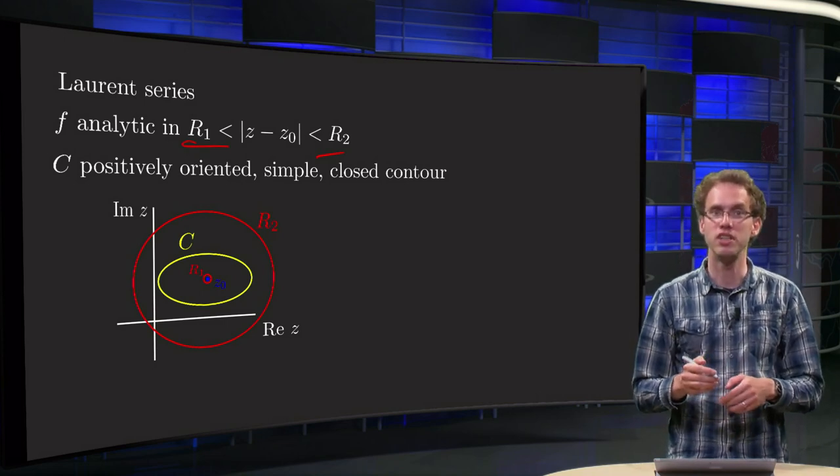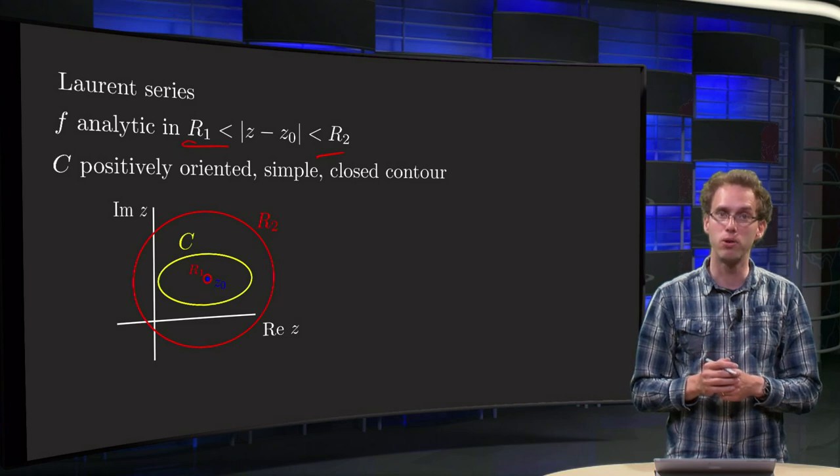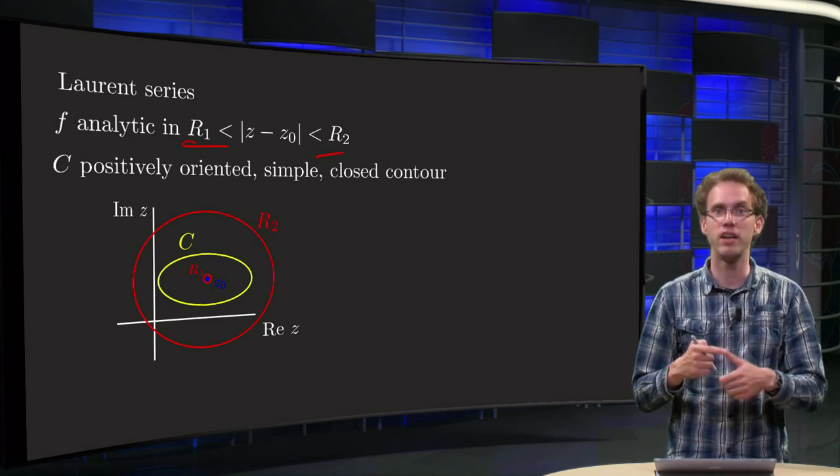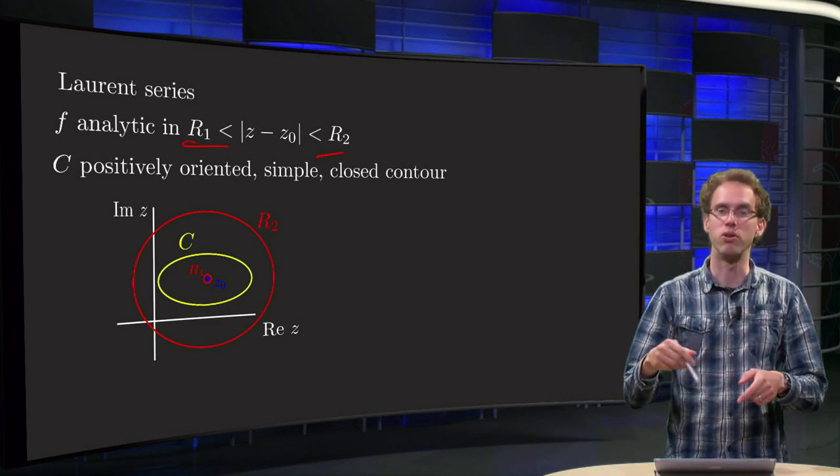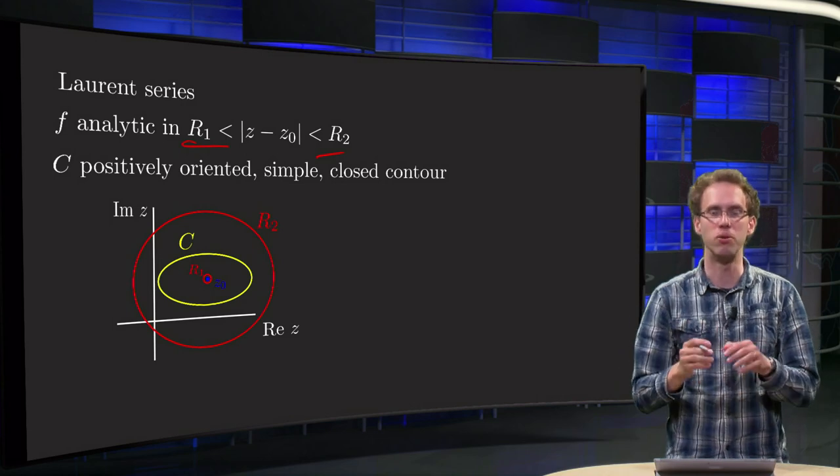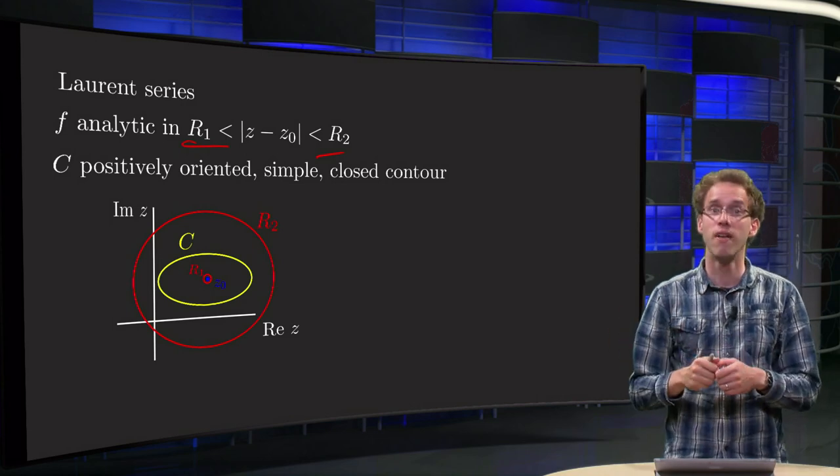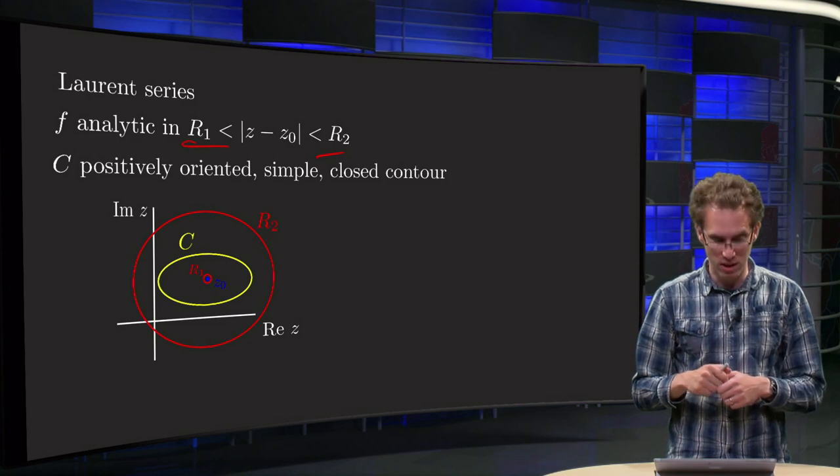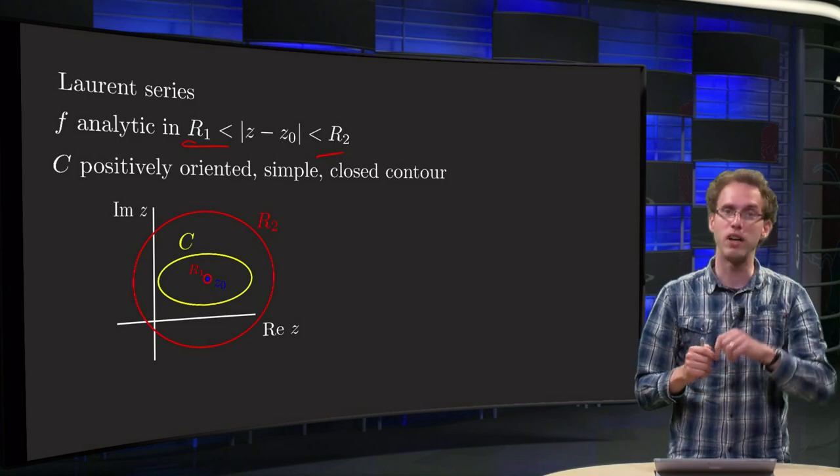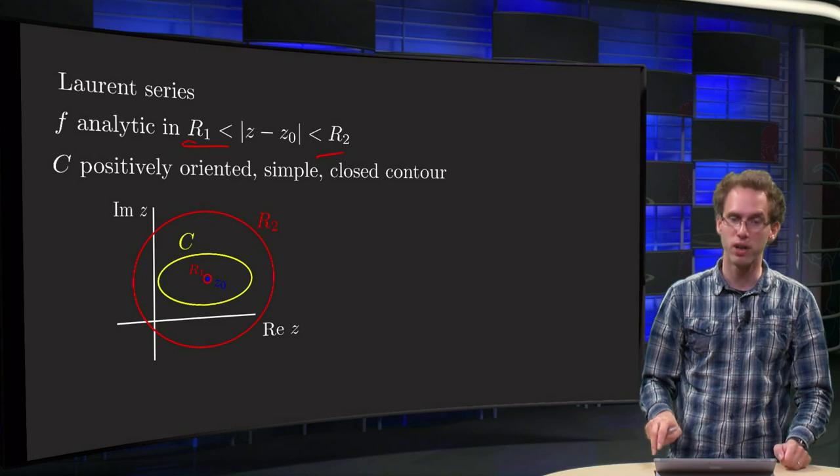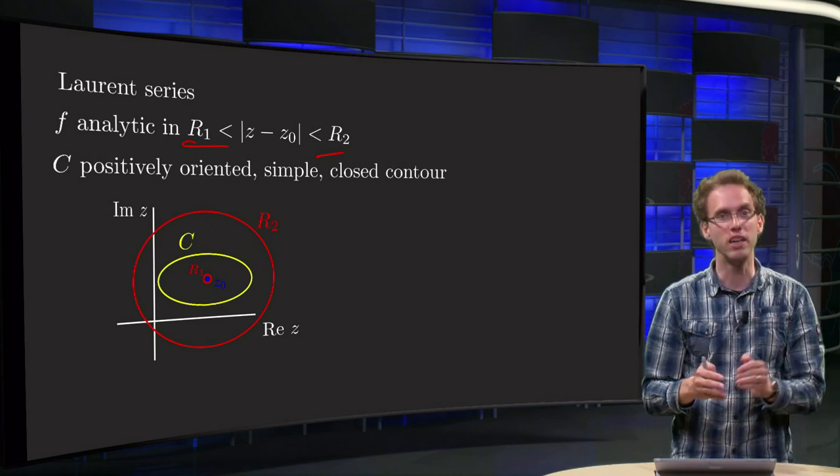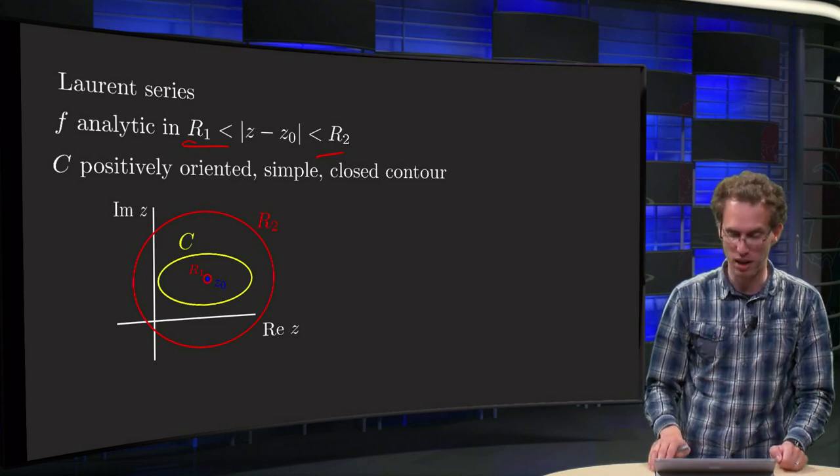Suppose now C is the yellow contour, some positively oriented simple closed contour. So you do not have self-intersections, no aids like that. You have to be closed of course, and you go counterclockwise. That is what we call positively oriented. So you can easily draw it in this picture, some C around it.